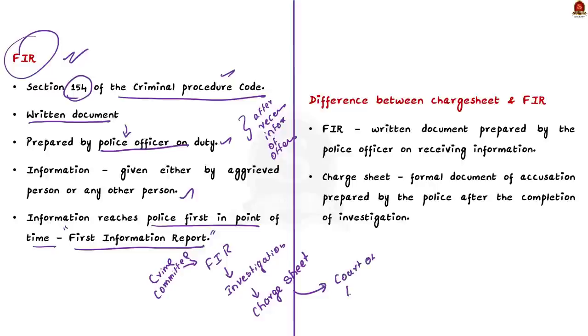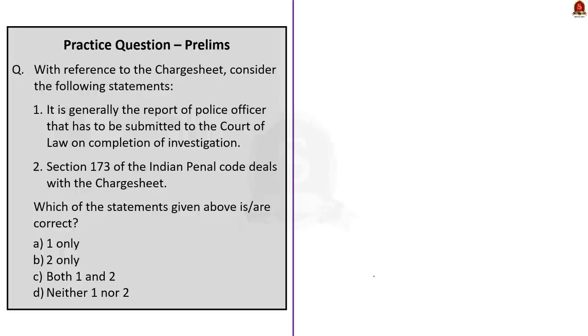The difference between charge sheet and FIR is simple. The FIR is a written document prepared by the police when they receive information about the commission of an offense. Whereas a charge sheet is a formal document of accusation prepared by the police after the completion of the investigation. This is the main difference between charge sheet and FIR. In this discussion we saw the basics about charge sheet and FIR.